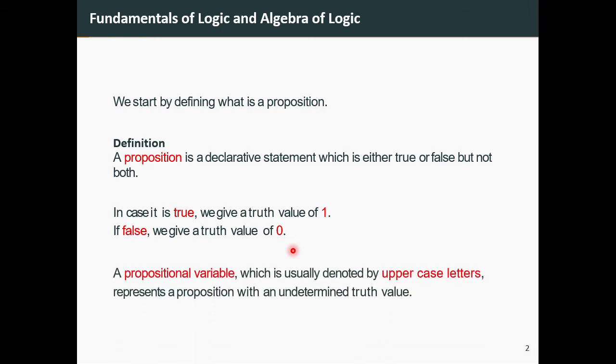A propositional variable represents a proposition with an undetermined truth value. This means the truth value could be one or zero. In our course, we will use uppercase English letters to denote a propositional variable.